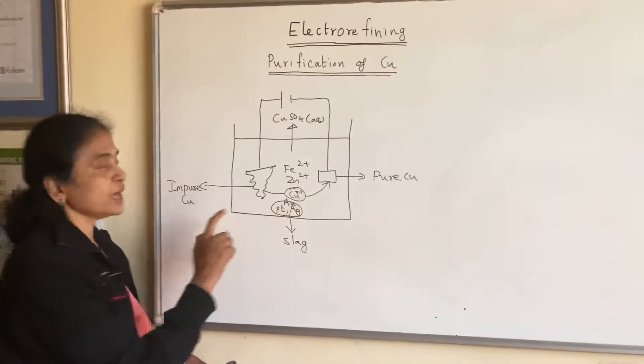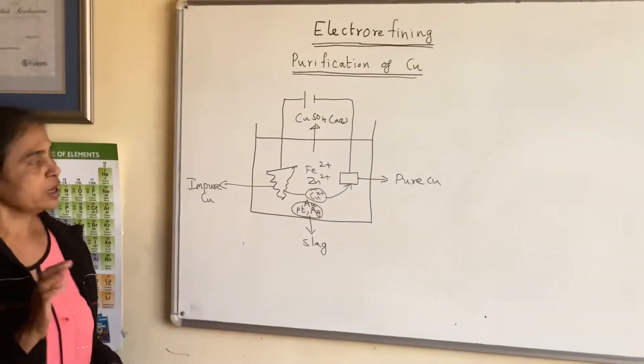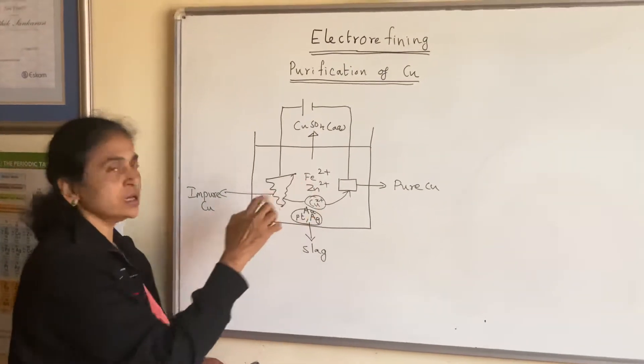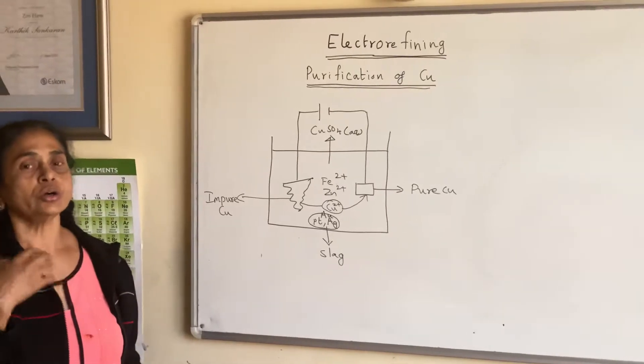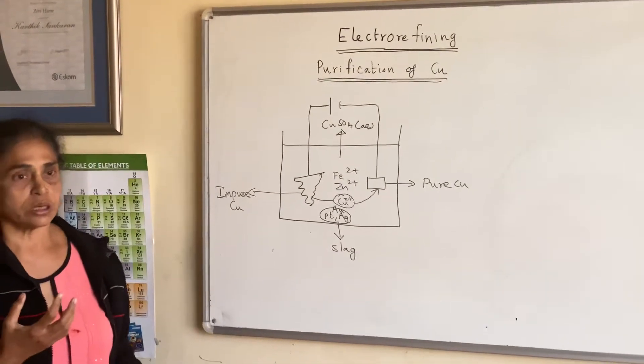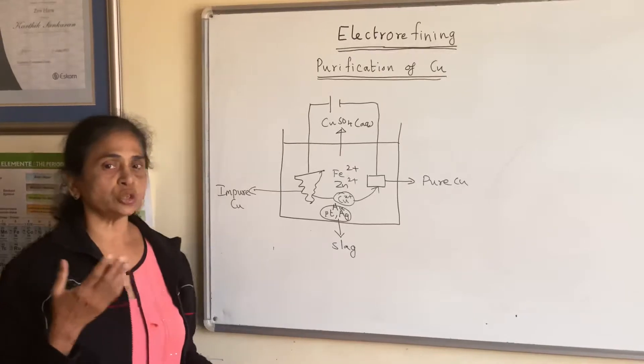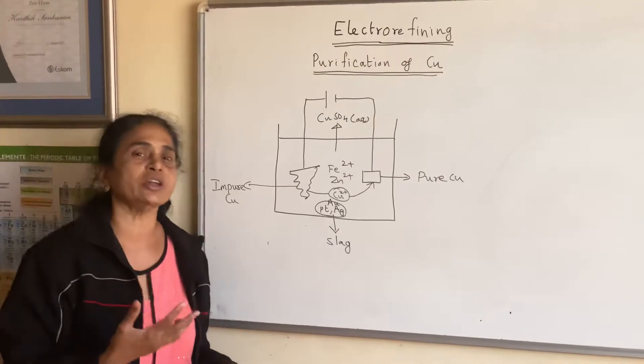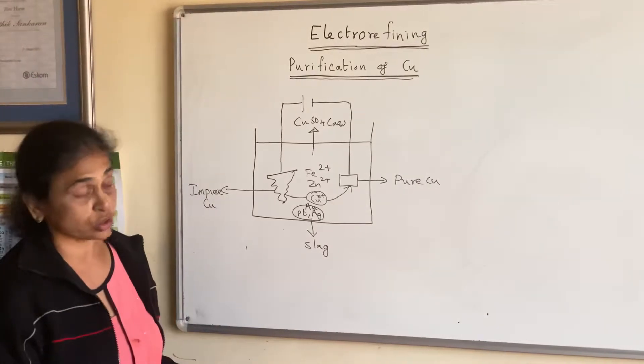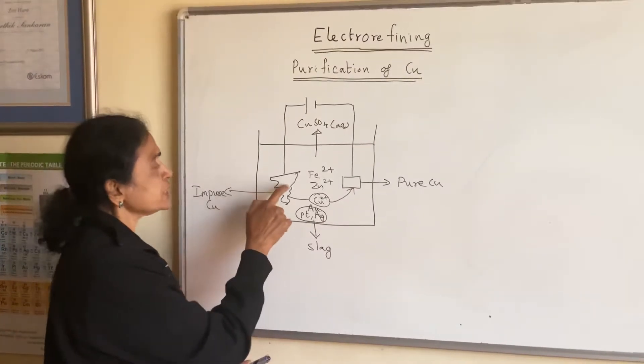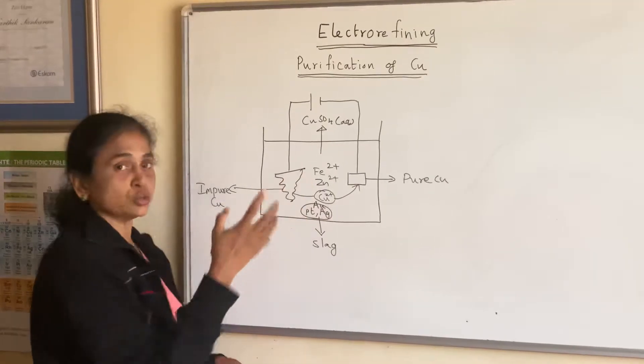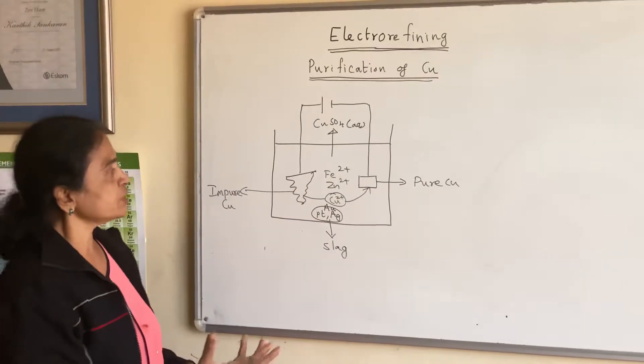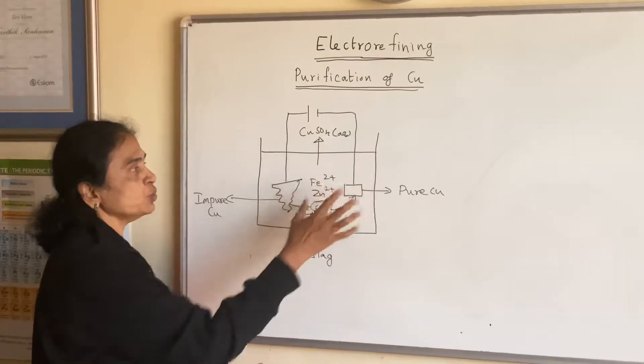Iron and zinc are strong reducing agents. Normally, strong reducing agents undergo oxidation, or they can ionize and form ions by giving electrons. So the elements present here—zinc two plus and iron two plus—they undergo ionization and they become ions and they go into the solution.